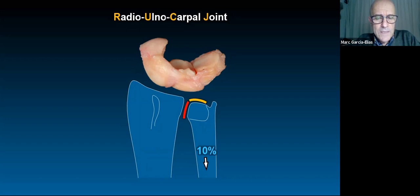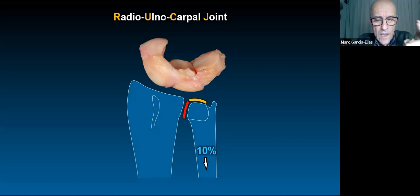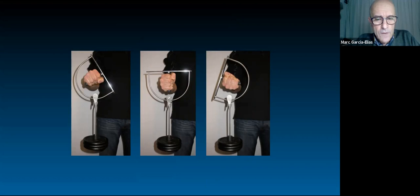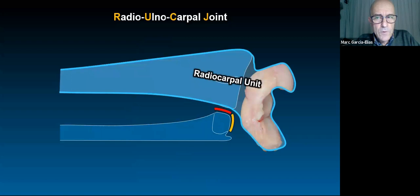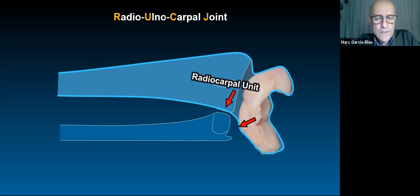We shouldn't study that joint in a vertical position. Its maximal activity is when the forearm is horizontal, parallel to the floor. In that position the ulnar head is an essential pivot point about which the radiocarpal unit rests. During pronation-supination, particularly when the forearm is horizontal, the ulnar head is a very important pivot point and must resist considerable forces.